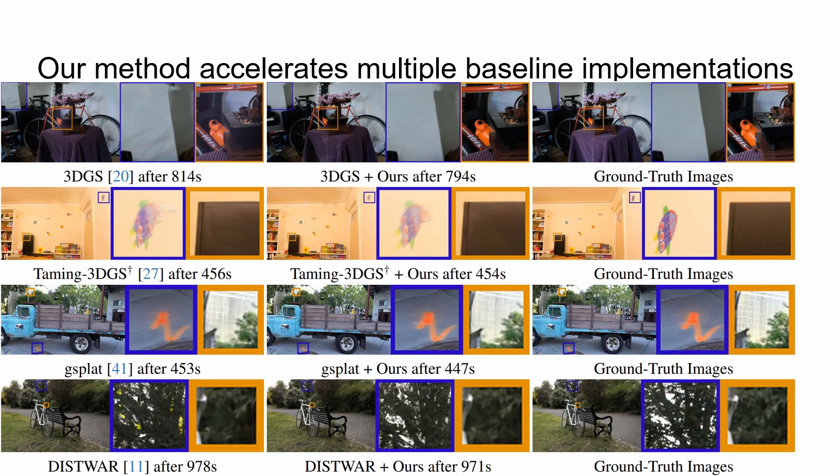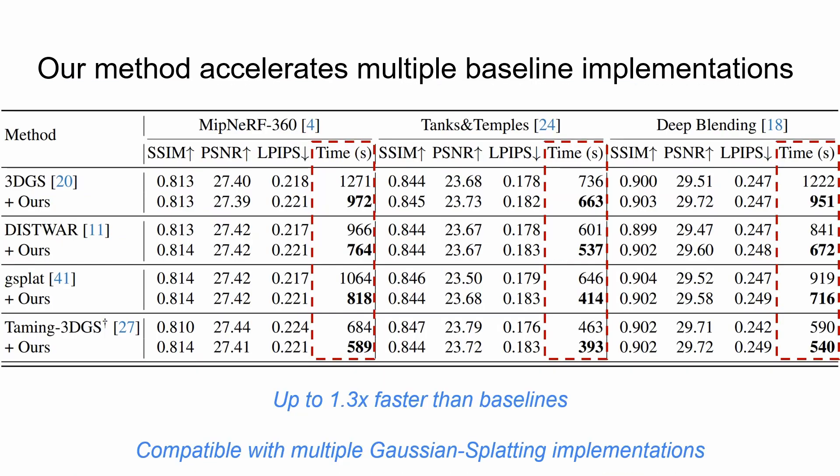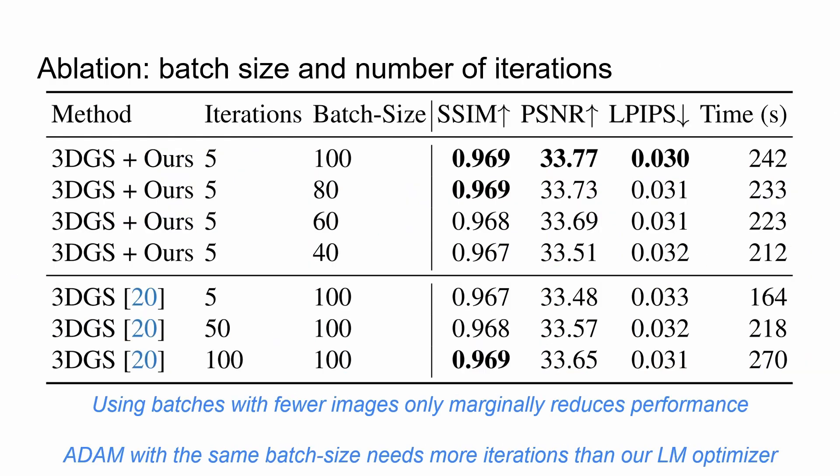We compare our method against multiple baselines by switching out the optimizer to our novel LM implementation. We accelerate the optimization for all baselines and datasets. We test our method with different batch sizes to show the effectiveness of image subsampling. Compared to Adam, our optimizer converges in fewer iterations.